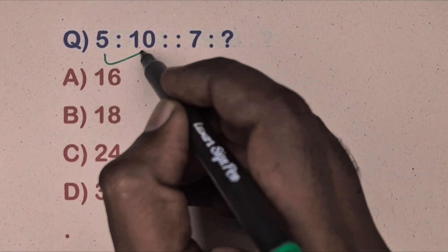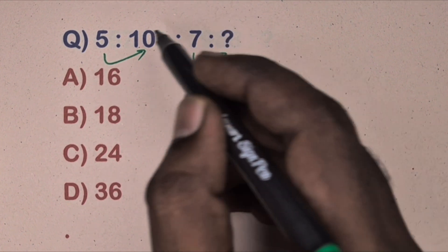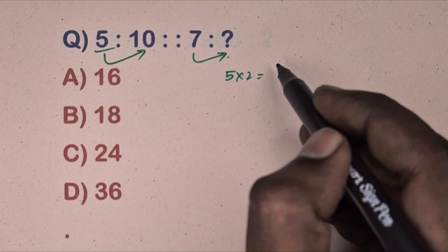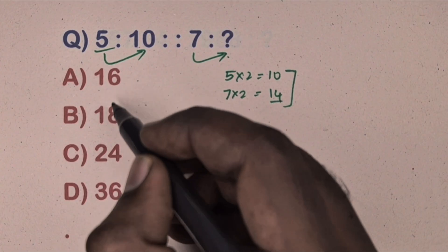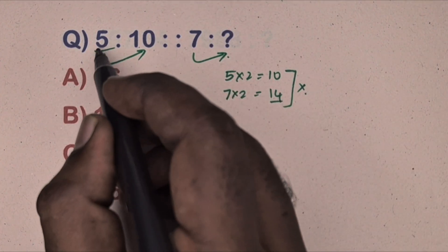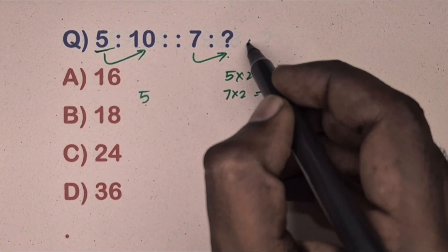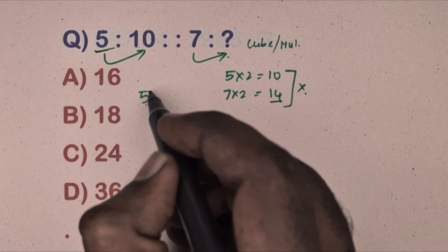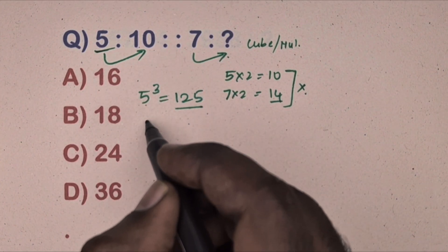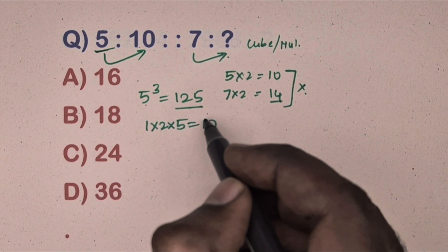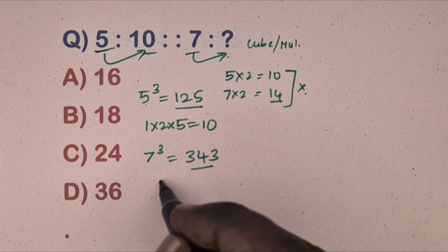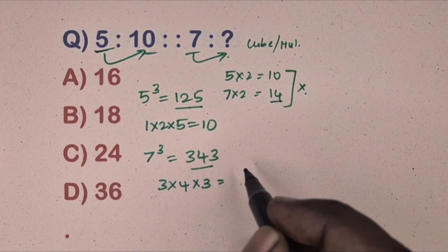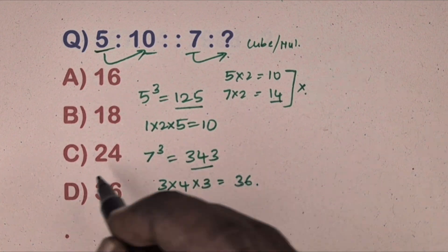Next question: five is related to ten, seven is related to which number? Options given. Trying five times two equals ten, so seven times two equals 14 — but 14 is present in the options, yet this is the wrong method. Correct method: this is a cube and multiplication relation. Five cubed equals 125, multiply the digits: one times two times five equals ten. Same way, seven cubed equals 343, multiply the digits: three times four times three equals 36. So 36 is the correct answer.